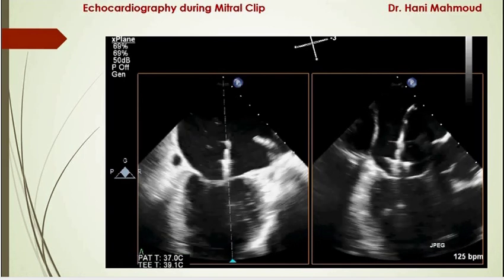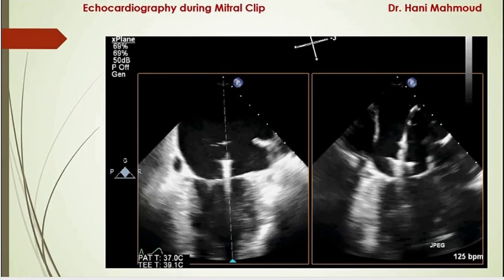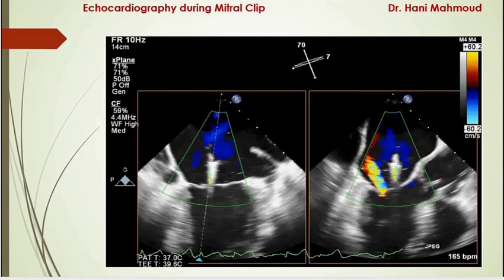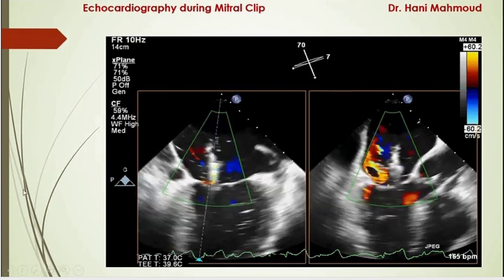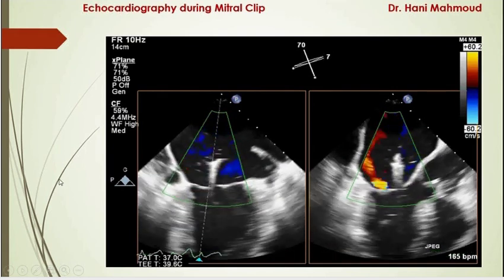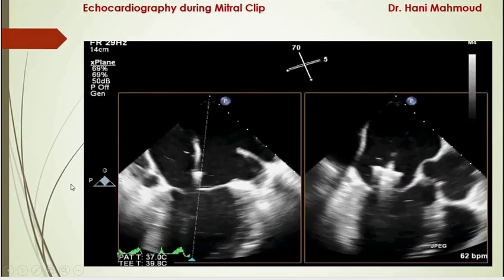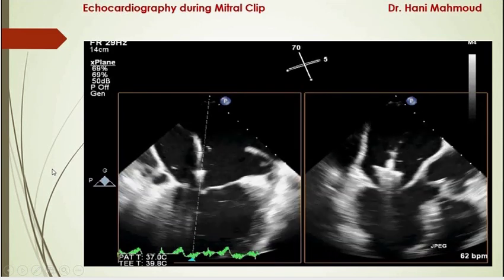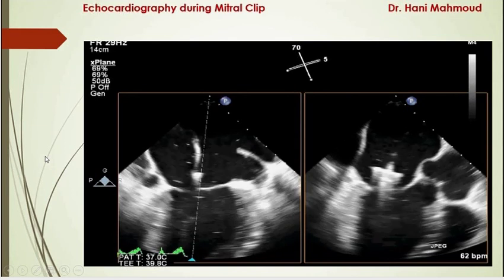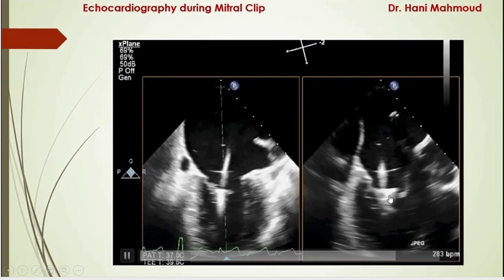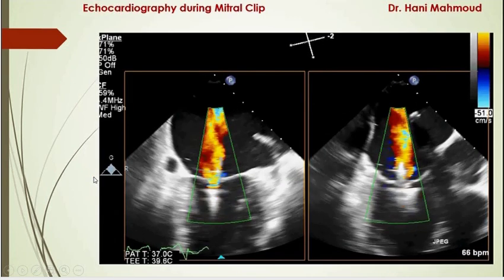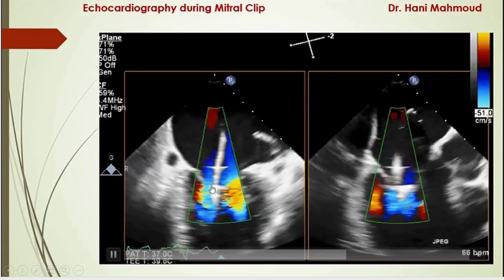The interventionist then introduces the opened mitral clip through the mitral valve itself. By applying color Doppler, we should see the clip bisecting the color signal — this is the key finding we need to confirm during this step. The interventionist can also push and pull the entire system to observe the behavior of the clip while it dives into the left ventricle. Once the clip is inside the left ventricular cavity with arms open, color confirms the clip is bisecting the color signal correctly.